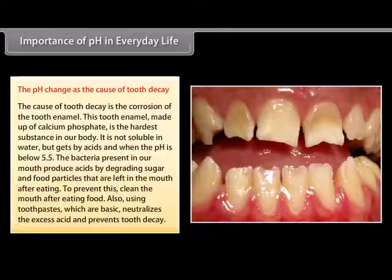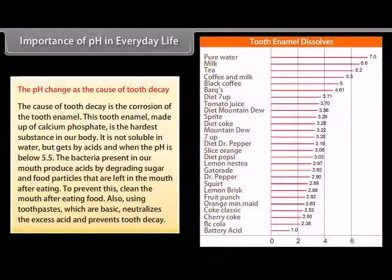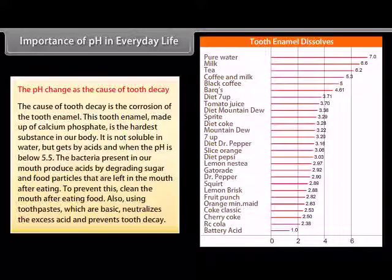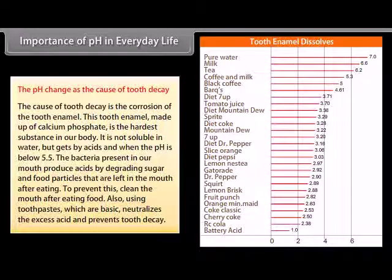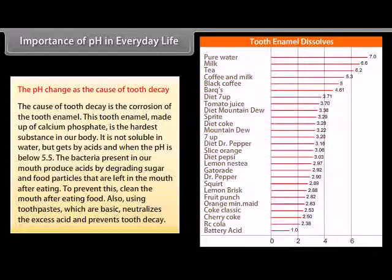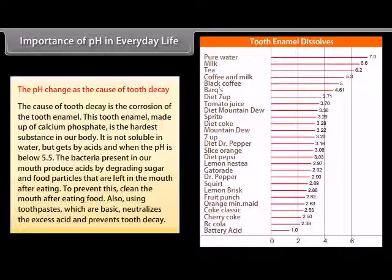The cause of tooth decay is the corrosion of tooth enamel. This tooth enamel, made up of calcium phosphate, is the hardest substance in our body — it is not soluble in water but gets corroded by acid when the pH drops below 5.5. Bacteria present in our mouth produce acids by degrading sugar and food particles left after eating. To prevent this, clean your mouth after eating. Using toothpastes, which are basic, neutralizes the excess acid and prevents tooth decay.